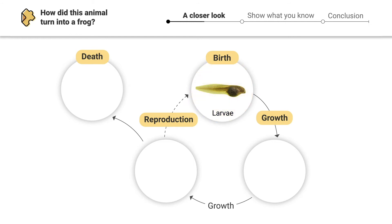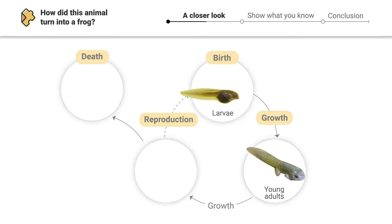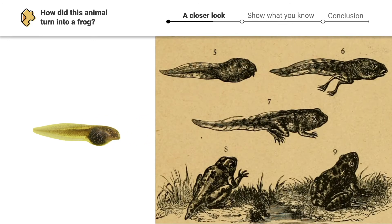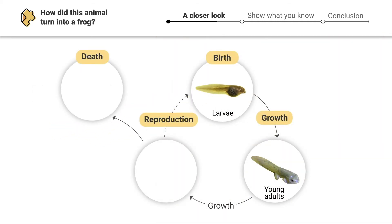Over time, our tadpole grows bigger, but as it grows it also starts to change. You may have noticed the tadpole has gotten bigger and now it has four legs. Those are some big changes! This tadpole is going through a process called metamorphosis, where an animal's appearance will completely change as it grows.